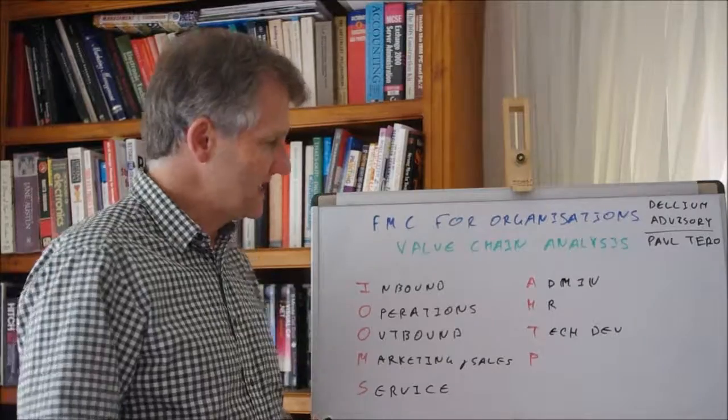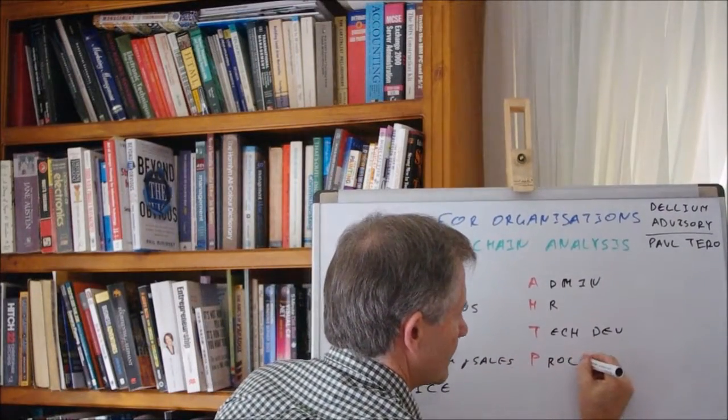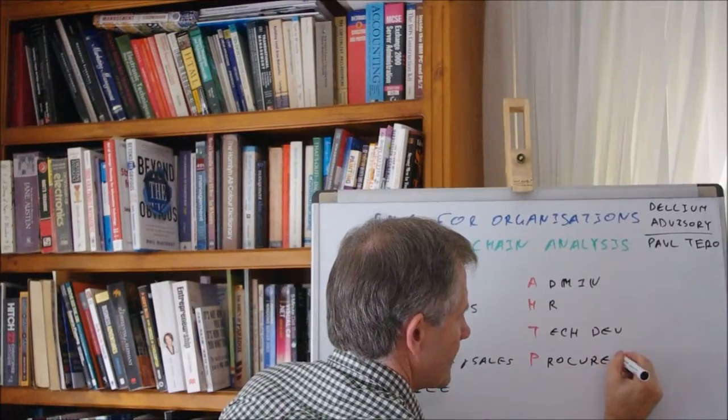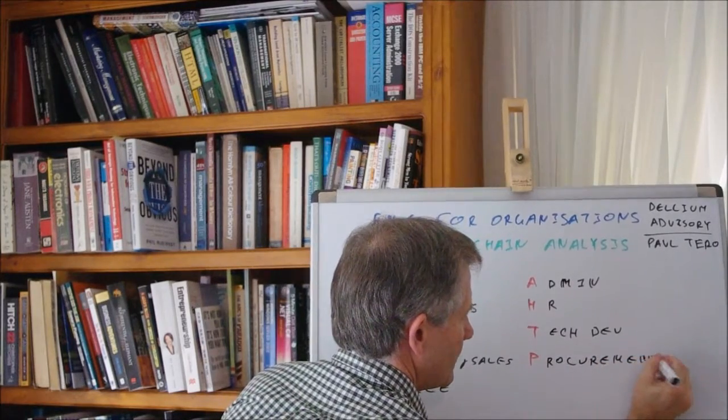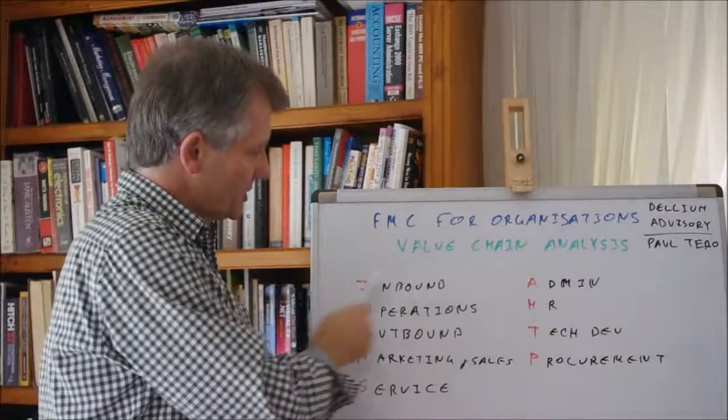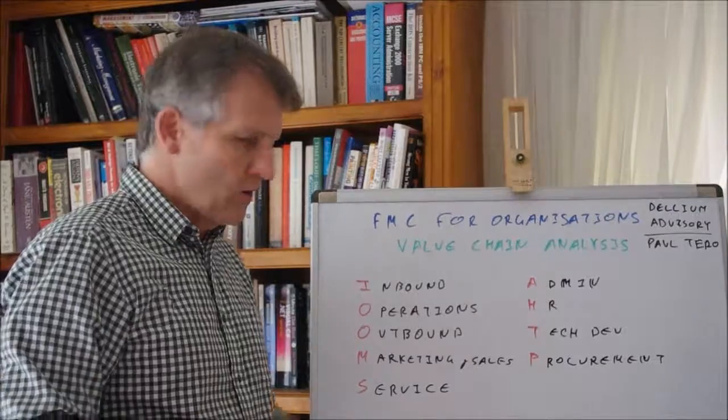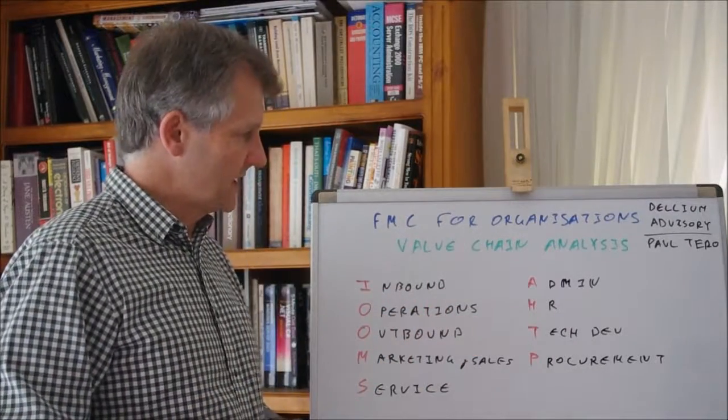And the final one, P, is procurement. How do you purchase what you need? What are all the processes that you have?